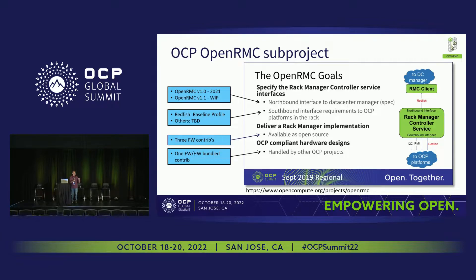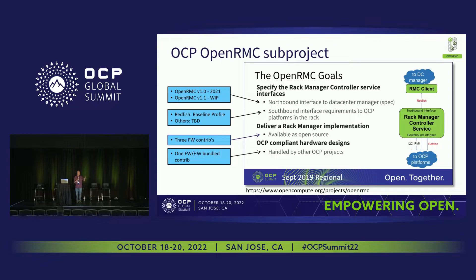When it was decided that we started defining profiles, people wanted to find the implementation, which was in the BMC. When we looked across the industry, there were at least six implementations of the repository, which had been forked. It took quite a bit of time to converge the industry to one OpenBMC and then allow Linux Foundation to govern that OpenBMC.